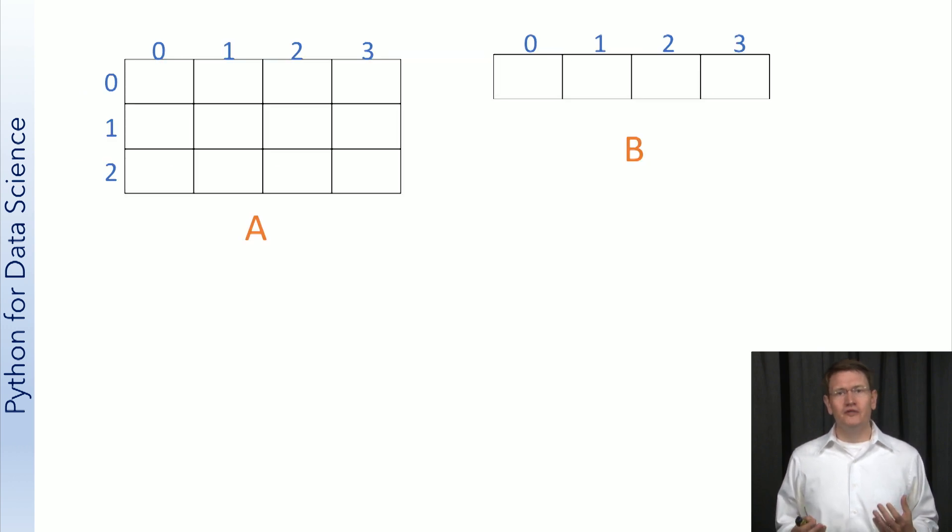Suppose you have a multidimensional array A, and you want to add the elements in array B to each row of A. You've got a mismatch in the size of the arrays. To solve this, you will likely find yourself trying to figure out how to replicate B three times so you can do the computation that you want. This mismatch in sizes is the exact problem broadcasting aims to solve.